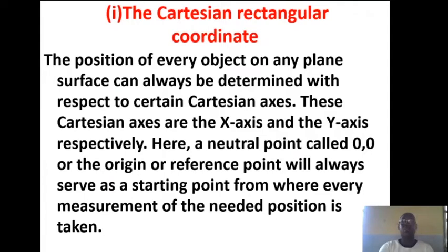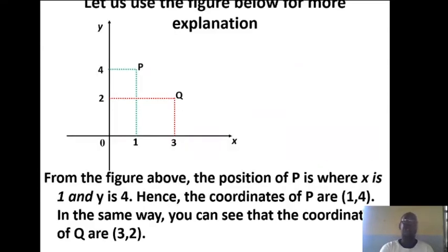We say that the position of every object on any plane surface can always be determined with respect to certain Cartesian axes. These Cartesian axes are the X-axis and the Y-axis respectively. A neutral point, which is called the origin, represented by (0, 0) and can also be called the point of reference, will always serve as a starting point from where every measurement of the needed position is taken. Let us use the figure below for explanation.